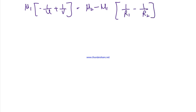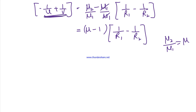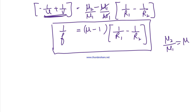Dividing both sides by mu1: (1/v minus 1/u) = (mu2/mu1 minus 1) times (1/R1 minus 1/R2). Since mu2/mu1 equals the refractive index mu, this becomes: (1/v minus 1/u) = (mu minus 1)(1/R1 minus 1/R2). This is the lens formula, and accordingly 1/f = (mu minus 1)(1/R1 minus 1/R2). This is the final lens maker's formula.